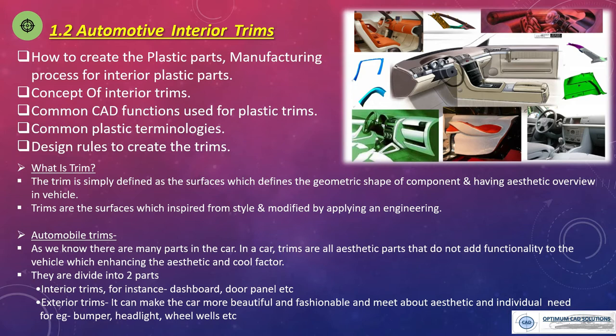Let's move to the next point — automobile trim. As we know, there are many parts in a car. Trims are all aesthetic parts that do not add any functionality to the vehicle but enhance the aesthetic and styling factor. They are divided into two categories: interior trim and exterior trim. Interior trim design includes the dashboard, instrument panel, and different types of controls like the central console, floor console, driver console, and co-driver console.